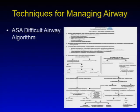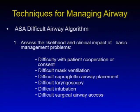Next, the ASA difficult airway algorithm. The first step is to assess the likelihood and clinical impact of basic management problems: difficulty with patient cooperation or consent, difficult mask ventilation, difficult supraglottic airway placement, difficult laryngoscopy, difficult intubation, or difficult surgical airway access. These should all be assessed prior to inducing the patient.